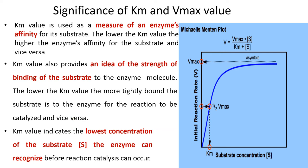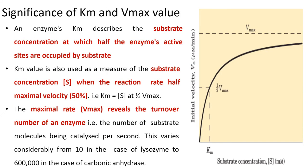KM value indicates the lowest concentration of substrate the enzyme can recognize before reaction catalysis can occur. The enzyme's KM describes the substrate concentration at which half of the enzyme's active sites are occupied by substrate. KM value is also used to measure the substrate concentration when the reaction rate is at 50% maximum velocity.